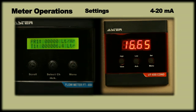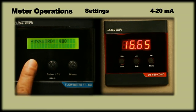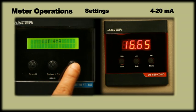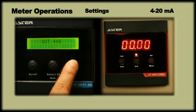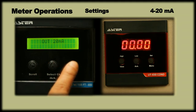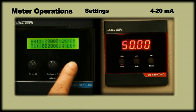To output standard 4 and 20 mA, enter password 420. Press menu key. Display will show 4 mA. Press menu key again to output 4 mA. Press select ch key. Display will show 20 mA. Press menu key to output 20 mA. Press menu key again to exit.